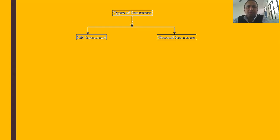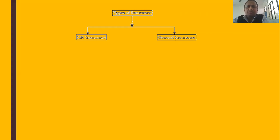The person insures their life so that in case of any mishappening, the insurance company provides funds to the family or the nominee. General insurance covers the risk of uncertainty in the future in different things — it covers all other insurance that are not life insurance.